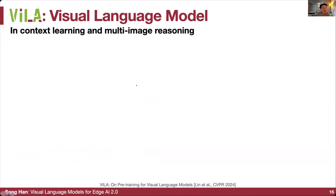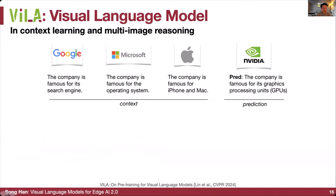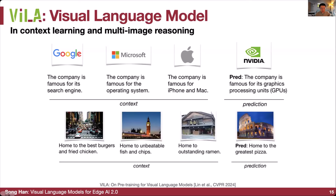Let's see the in-context learning and multi-image reasoning capability of VILA. Given a logo where the company is famous for search engines, a second logo famous for operating systems, the Apple logo famous for iPhone and Mac, and then the NVIDIA logo — it can say it's famous for GPUs. This is a prediction without explicitly telling the task, but inferring it from context. Similarly, it can identify restaurants famous for fried chicken, fish and chips, ramen, and pizza.